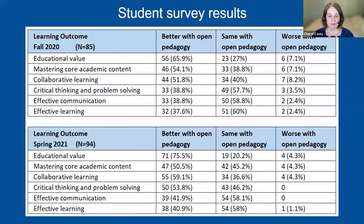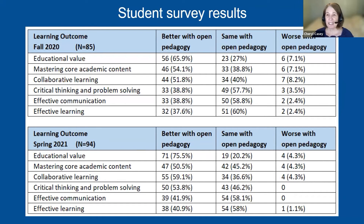The results of the student surveys from the first two semesters were really encouraging. In all learning outcome categories, students much more frequently rated learning with open pedagogy as better than worse. In the first semester, about 66% of students said the HRSM project had greater educational value than traditional learning activities. The following semester, that percentage increased to 75.5%. The percentage of students who thought outcomes were worse with open pedagogy ranged from 2.4% to 8.2% in the first semester, dropping to 0–4.3% in the second semester.